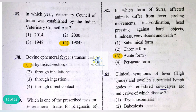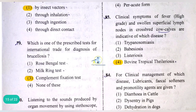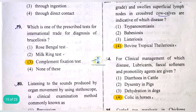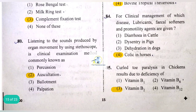Bovine ephemeral fever is transmitted by insect vectors. One of the prescribed tests for international trade for diagnosis of brucellosis is the complement fixation test — though the rose Bengal test is also commonly heard of. Listening to sounds produced by organ movement using a stethoscope is known as auscultation.